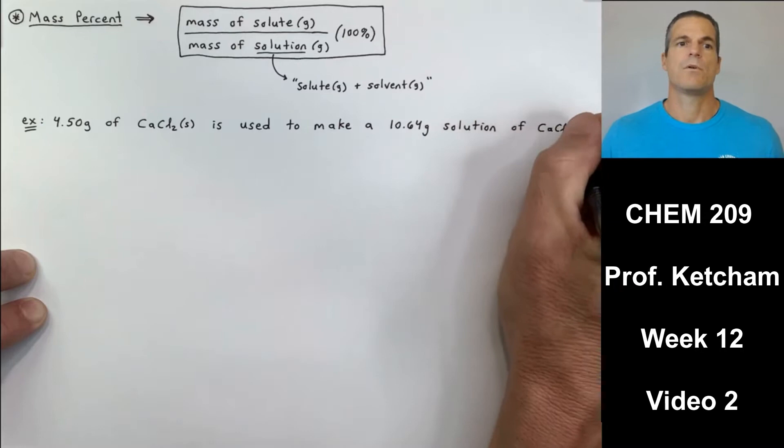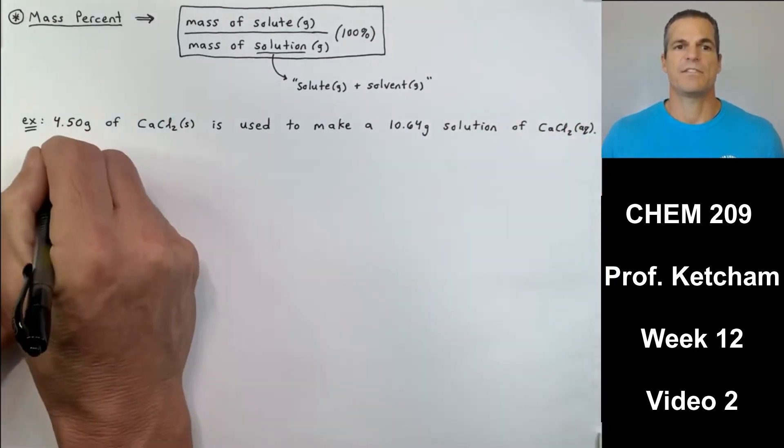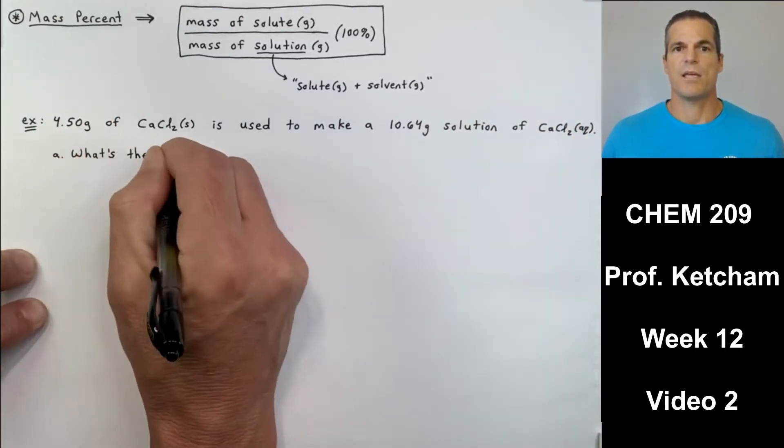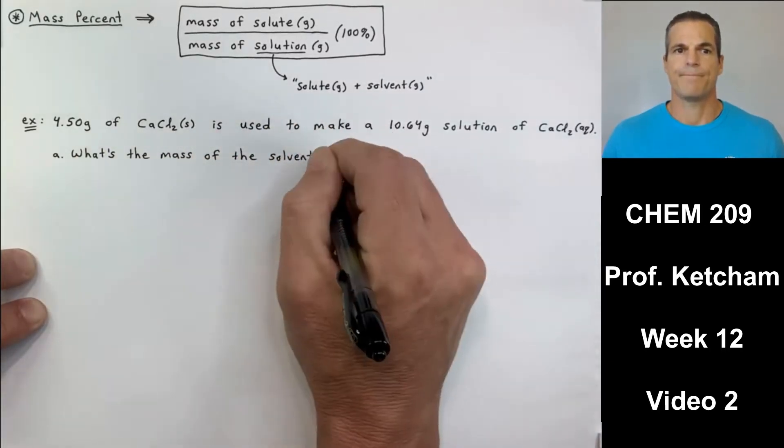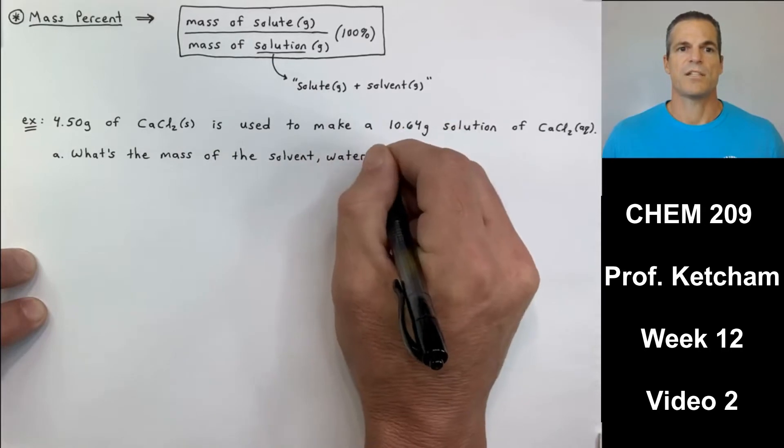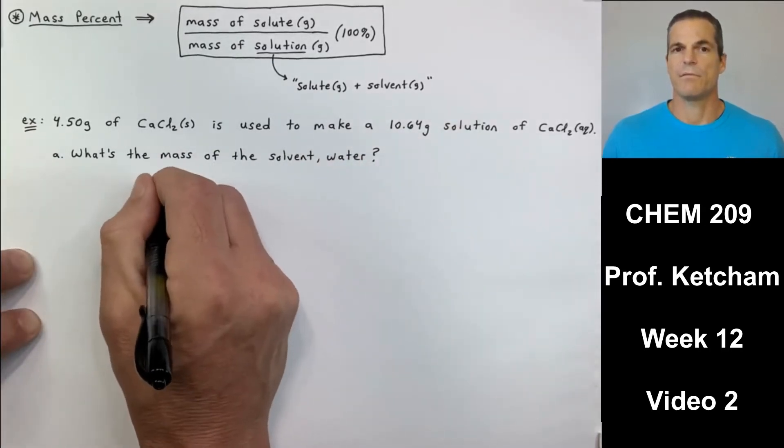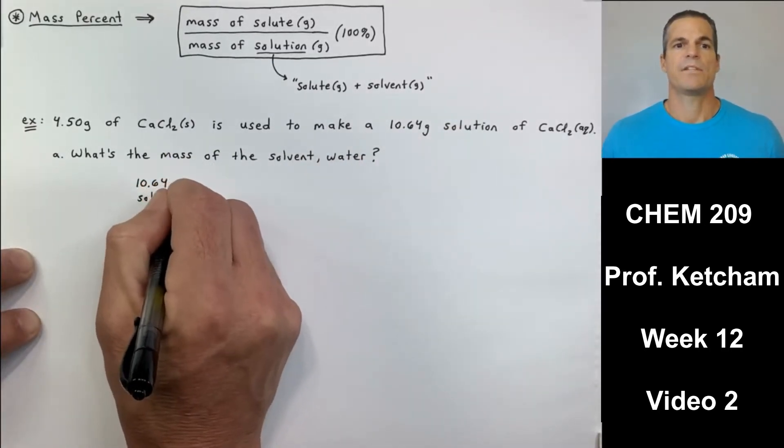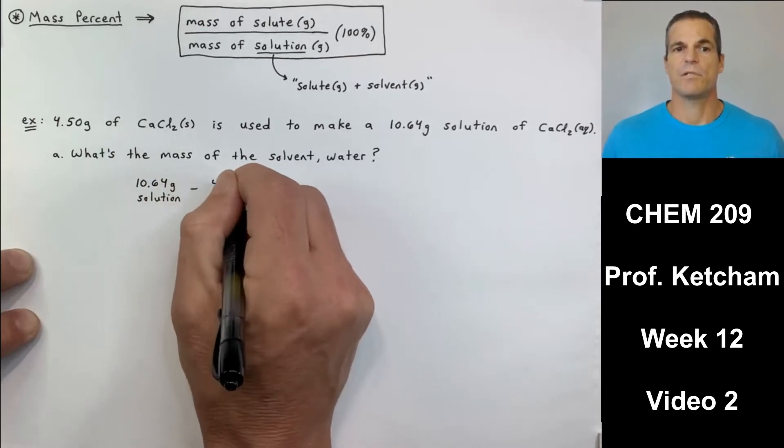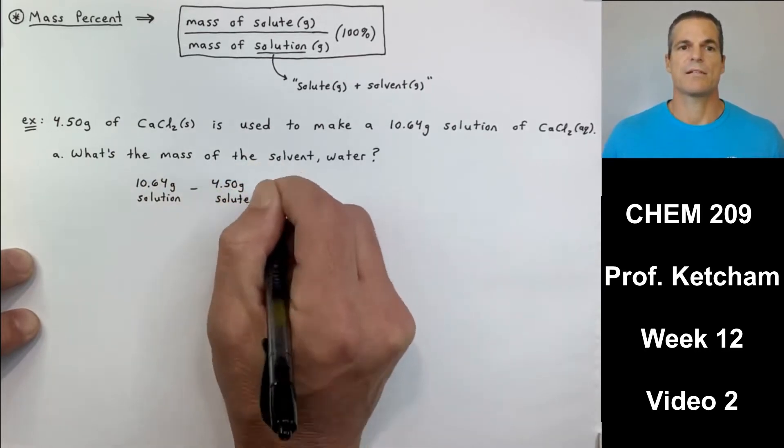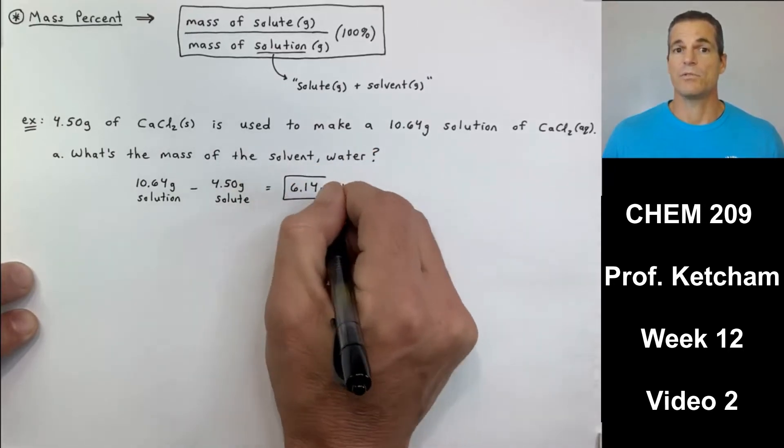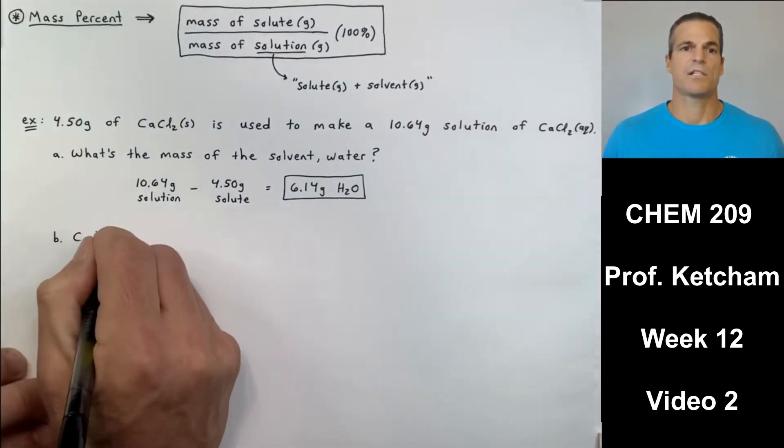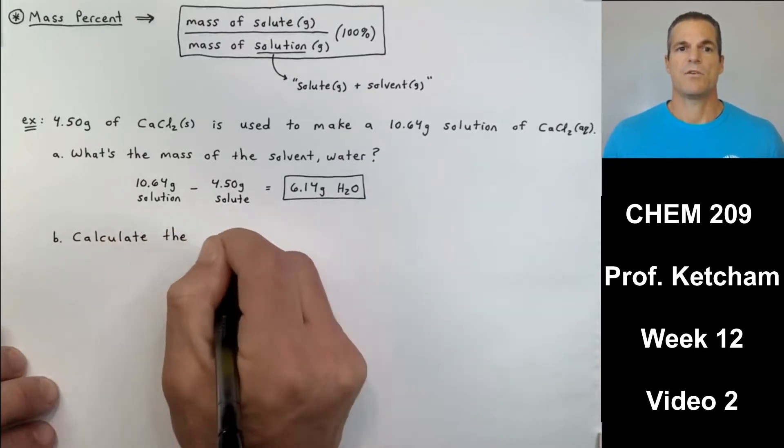So example: 4.50 grams of CaCl2 is used to make a 10.64 gram solution of calcium chloride. First question says, what's the mass of the solvent water? Well, we take the mass of the entire solution 10.64, we subtract the mass of the calcium chloride solute, and what we're left is the mass of the solvent 6.14 grams H2O.